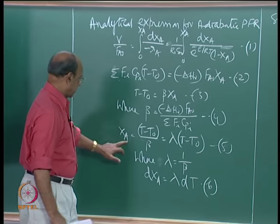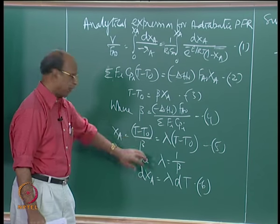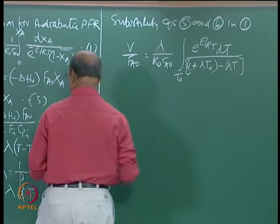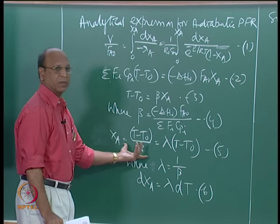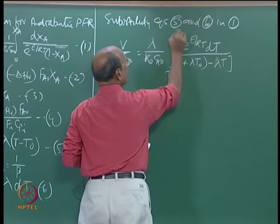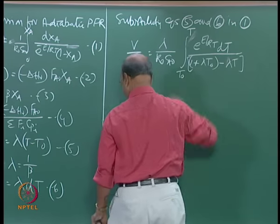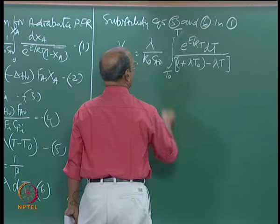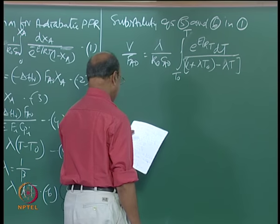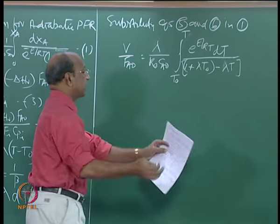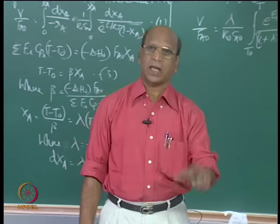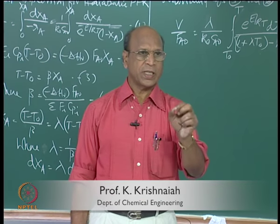When X equals 0, T equals T_0 (since beta multiplied by 0 is nothing). The upper limit T corresponds to T_0 + beta*X_A. There is another substitution needed to convert this into exponential integral form, because it is not easy to integrate directly. And note that this analytical expression is actually still an approximation, because the exponential integral itself is an approximation — they have tables where, for example, E_i(1) might equal 0.22227 or some such value.